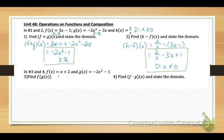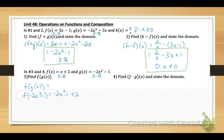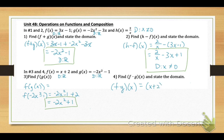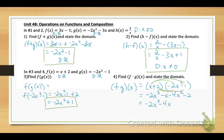Problems 3 and 4. Number 3 is a composition — find f of g of x. The domains of the original functions are all real numbers. Take the g of x function, negative 2x squared minus 1, and plug it into f of x. So instead of x, you have negative 2x squared minus 1, then plus 2. Combine like terms: negative 2x squared plus 1. Number 4 is multiplication — take f, which is x plus 2, times g, which is negative 2x squared minus 1. Distribute to get negative 2x cubed minus 4x squared minus x minus 2. Domain is all real numbers.